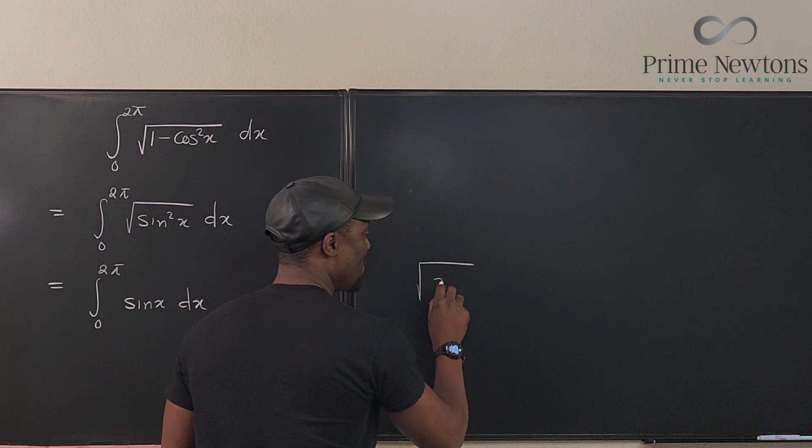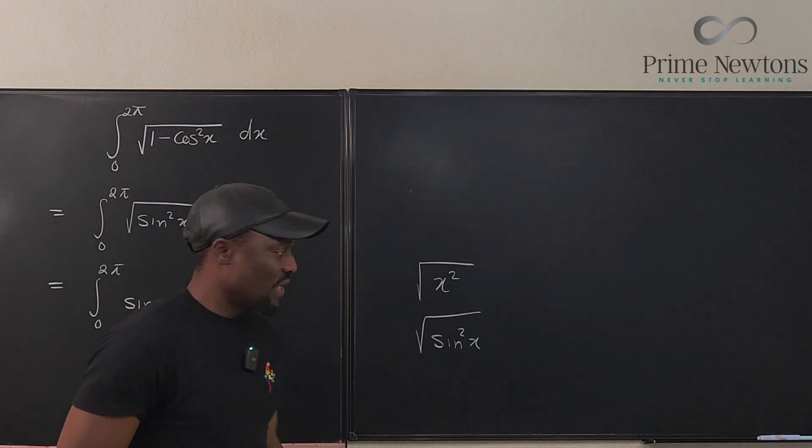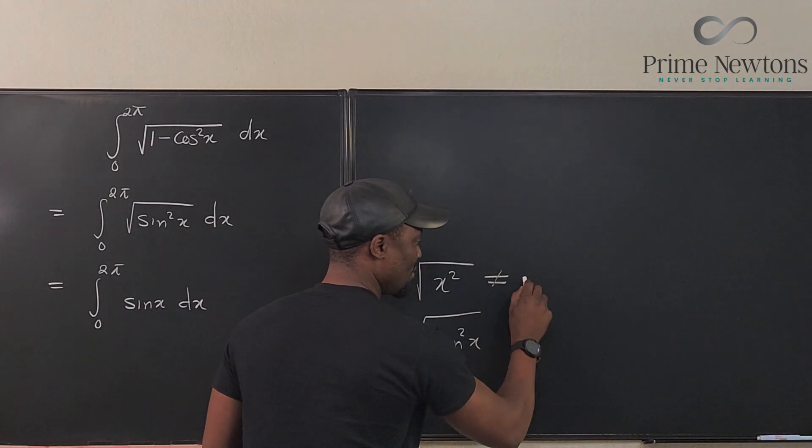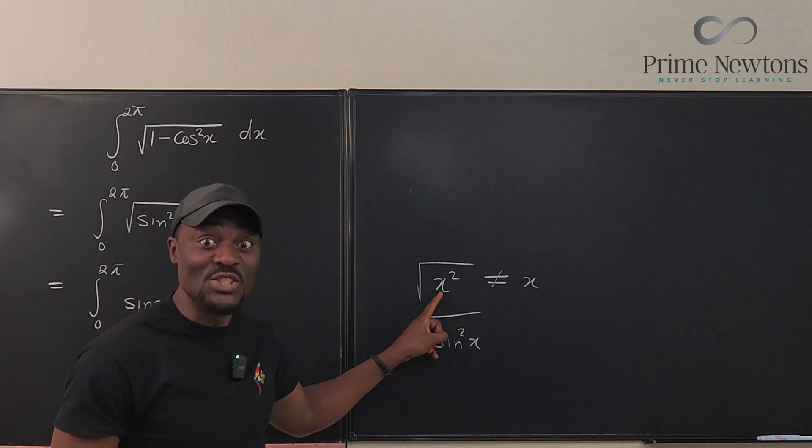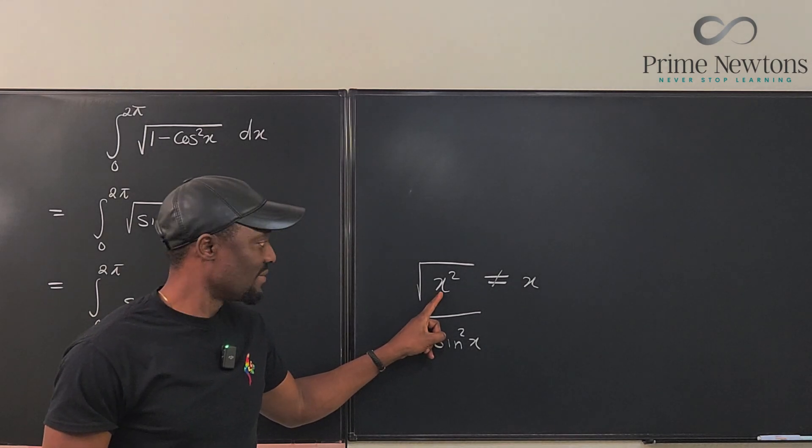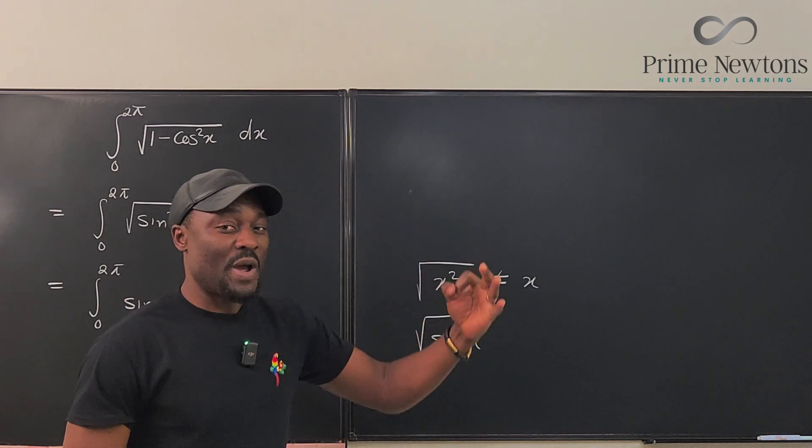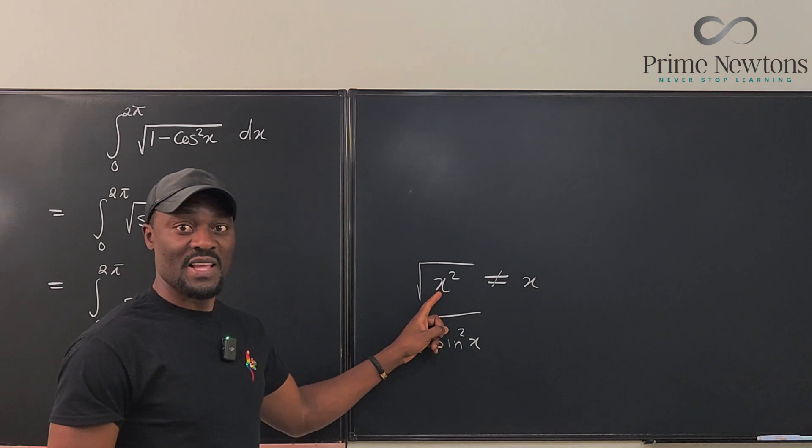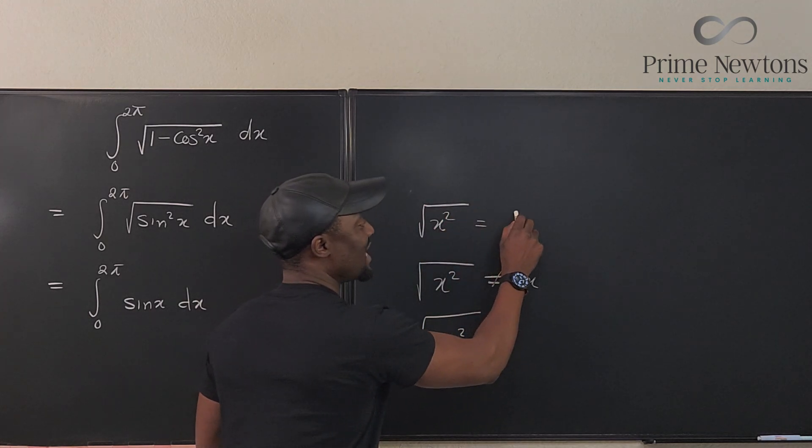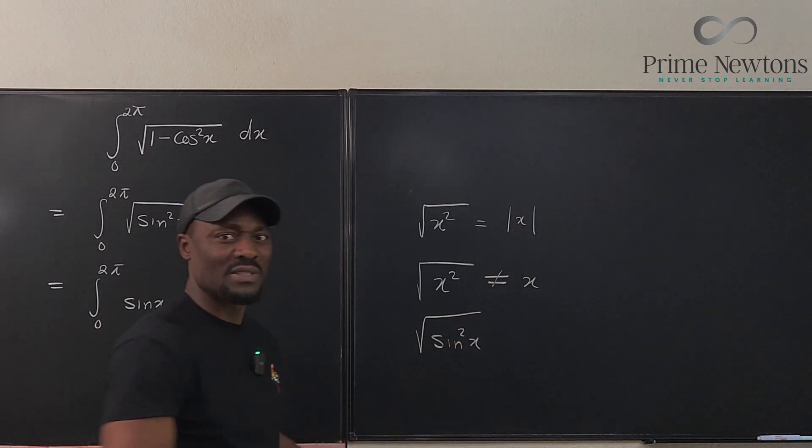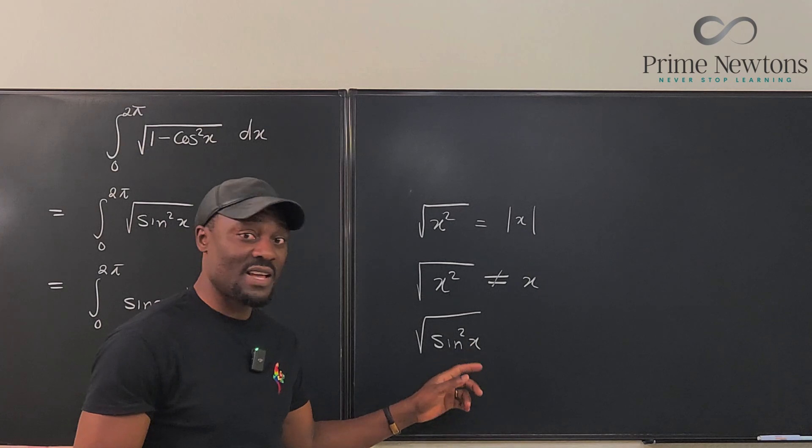Now, the concept is this. Whenever you take the square root of sine squared x, the answer to this is not equal to x. So this square root does not just cancel this. That only happens if this x is not a variable. Because you can compute the number. So the square root of a square is not the root.